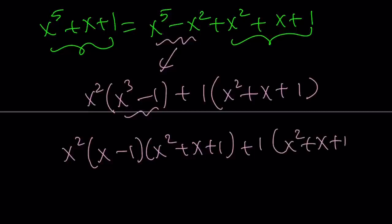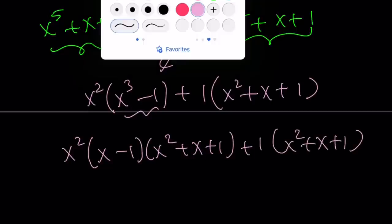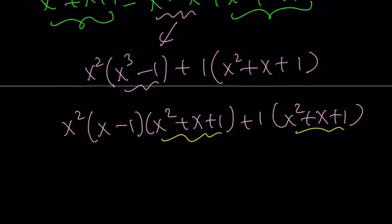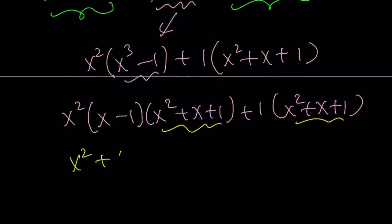We can go ahead and factor out the x squared plus x plus one here, right? So this is a common factor. We can basically pull it out, and the rest will follow, and we're going to get x squared times (x minus one).